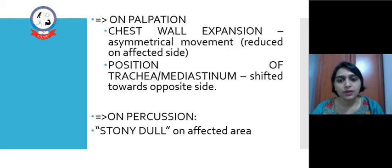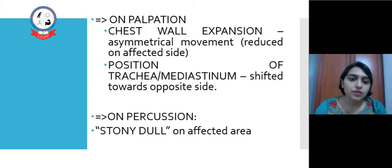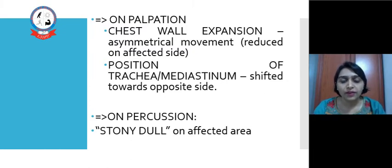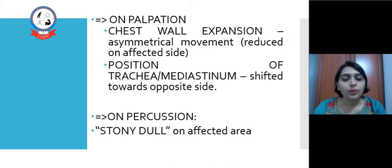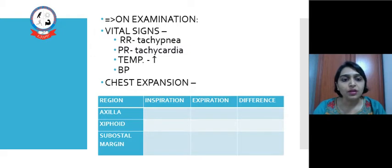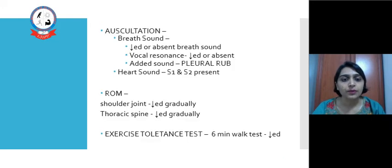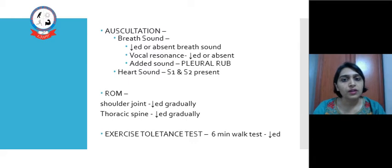On palpation, chest wall expansion is asymmetric — reduced on the affected side. The trachea or mediastinum is shifted toward the opposite side in a large Empyema Thoracis. On percussion, a stony dull note is found over the affected area. Vital signs include tachycardia, tachypnea and increased temperature. Chest expansion should be measured at all three levels in both inspiration and expiration. On auscultation, breath sounds are reduced or absent over the affected area, vocal resonance is reduced, and a pleural rub may be heard.